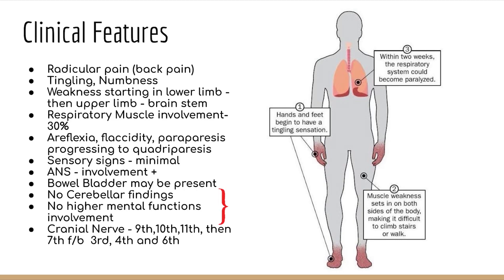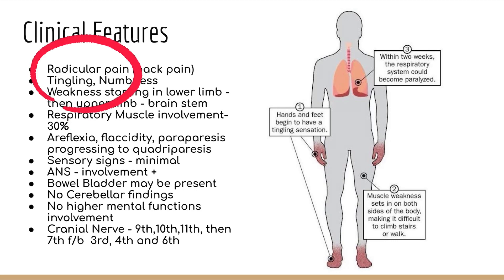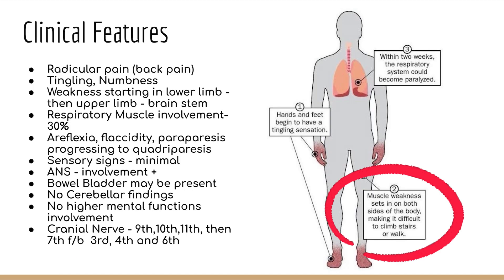Sensory signs are generally minimal, ANS involvement is seen, bowel and bladder involvement may be present, with no cerebellar findings and no higher mental function involvement. Cranial nerve involvement occurs, initially the 9th, 10th, and 11th nerves, then the 7th nerve, followed by the 3rd, 4th, and 6th nerves. As seen in the picture, tingling in hands and feet are the initial symptoms, then bilateral muscle weakness sets in — starting in the lower limbs and progressing upward — and may involve the respiratory system in 30% of cases within the first two weeks, potentially requiring ventilator support.